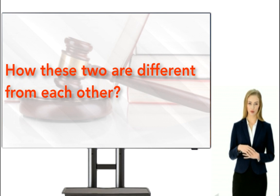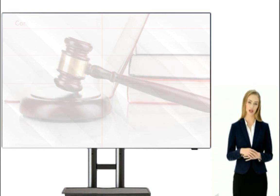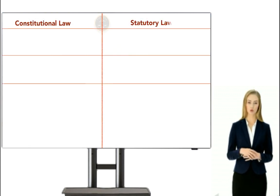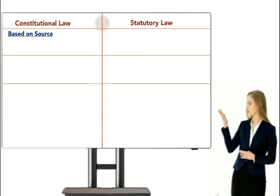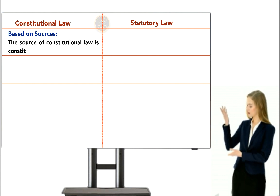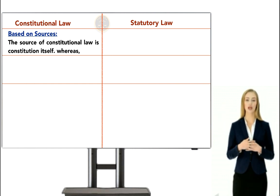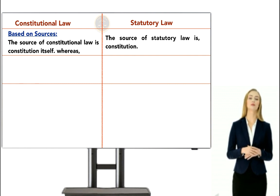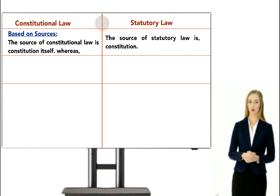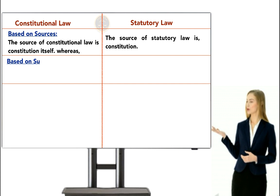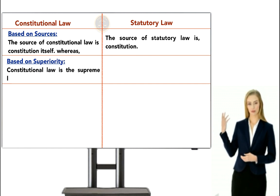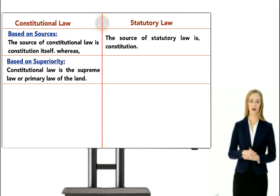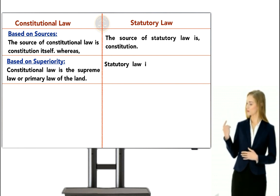You can understand the differences between them better through the following table. The first difference is based on source: the source of constitutional law is the constitution itself, whereas the source of statutory law is also the constitution. The second difference is based on superiority: constitutional law is the supreme or primary law of the land, while statutory law is the secondary law of the land.